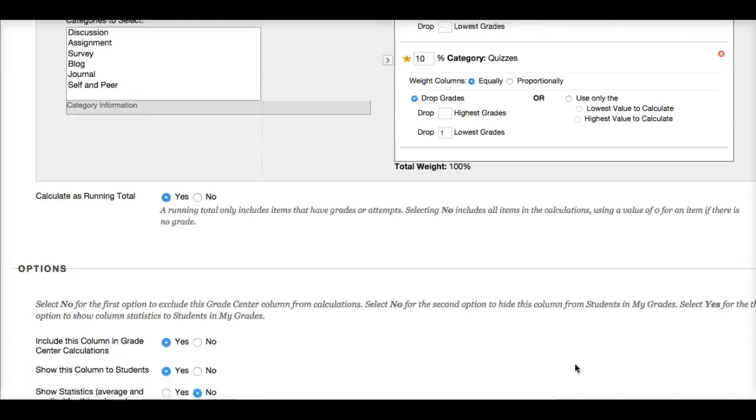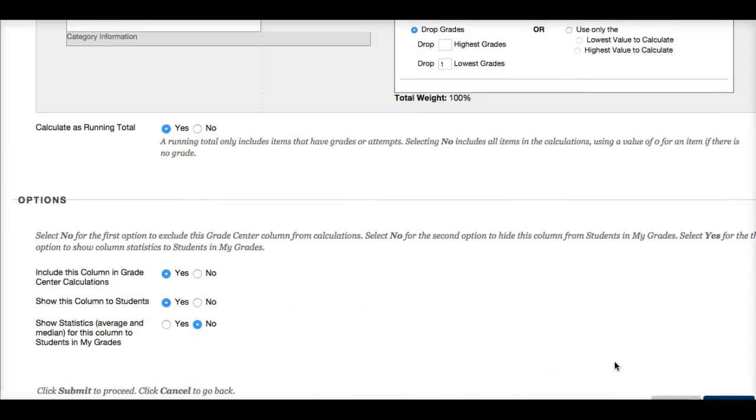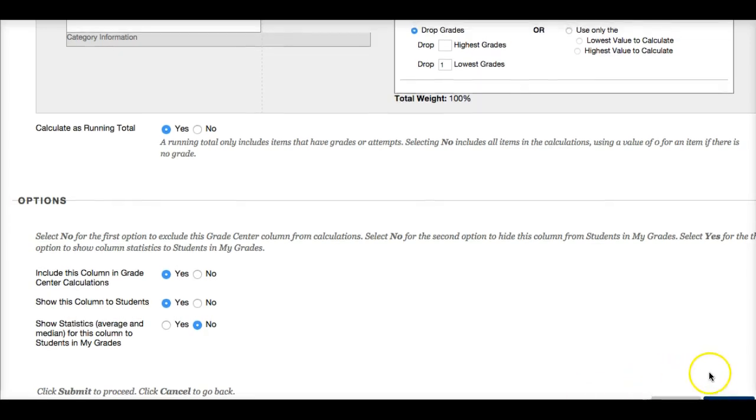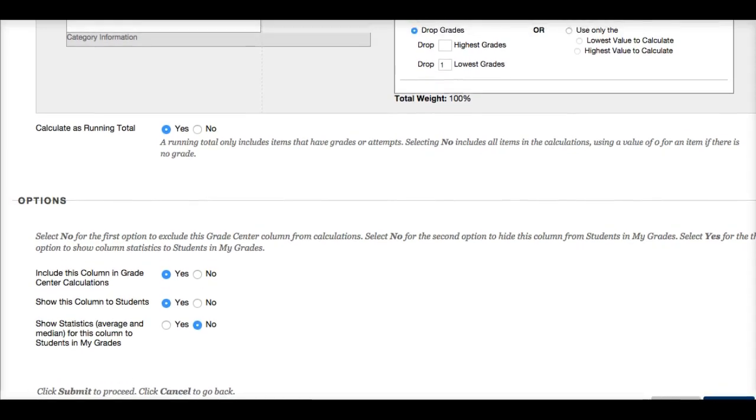And you want to scroll down. And you want to make sure it says include the column in grade center calculations: yes. Show the column to students: yes. We do want our students to see the weighted grade. Show statistics. This is the default. I usually leave it as no. And then I go down and I make sure I hit submit.